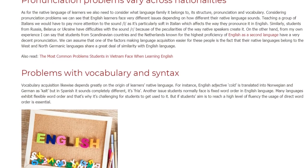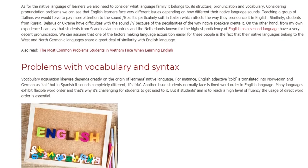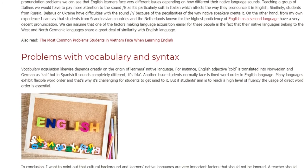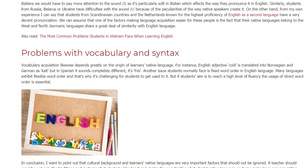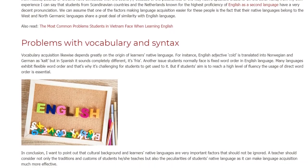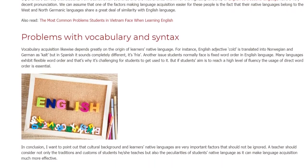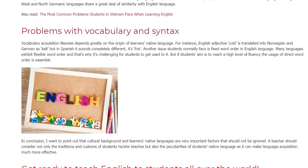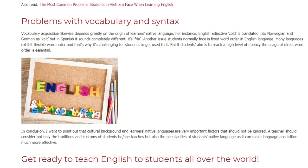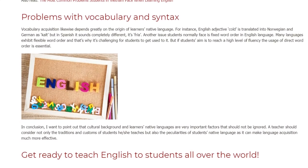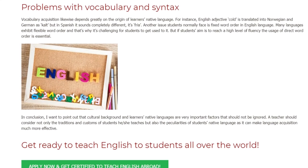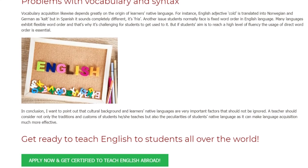Problems with Vocabulary and Syntax. Vocabulary acquisition likewise depends greatly on the origin of learners' native language. For instance, the English adjective 'cold' is translated into Norwegian and German as 'kalt', but in Spanish it sounds completely different — 'fría'. Another issue students normally face is fixed word order in English. Many languages exhibit flexible word order, and that's why it's challenging for students to get used to it. But if students' aim is to reach a high level of fluency, the usage of direct word order is essential.